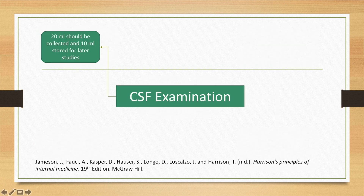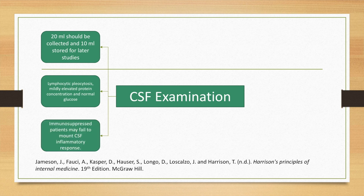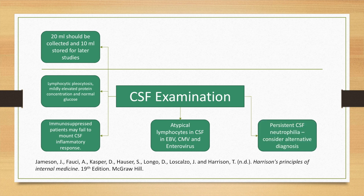During cerebrospinal fluid examination, 20 ml should be collected and 10 ml stored for later studies. Immunosuppressed patients may fail to mount a CSF inflammatory response — patients with HIV or post-bone marrow transplant may not show a neutrophilic or lymphocytic response. Atypical lymphocytes in CSF may be due to Epstein-Barr virus, cytomegalovirus, and enterovirus. If there is persistent CSF neutrophilia, we must consider an alternative diagnosis.